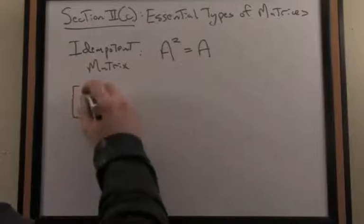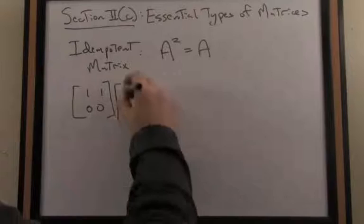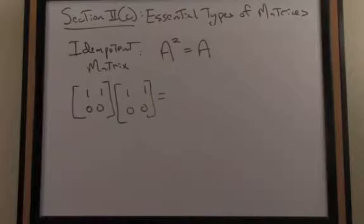Let's look at a quick example of an idempotent matrix. The matrix 1, 1, 0, 0, you can think of that as A, squared, let's see what our result is by matrix multiplication.